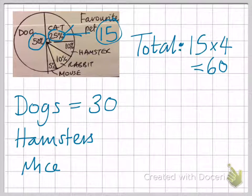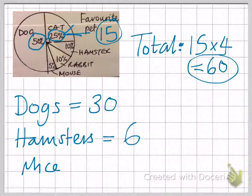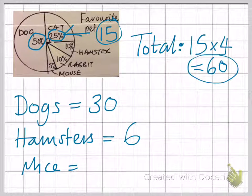The hamster is 10%, so we would need 10% of 60 total, and that will give us 6. And the mice would be 5%, which is half of 10%, which is 3.